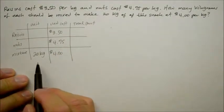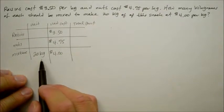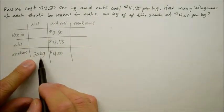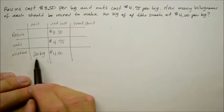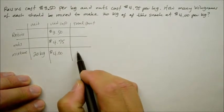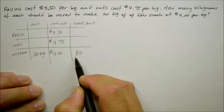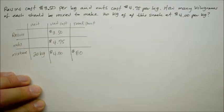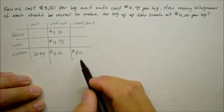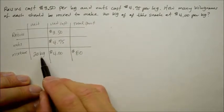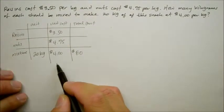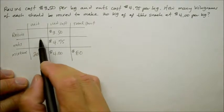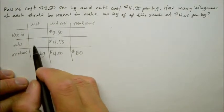Here's what we do know. We want a total of 20 kilograms. And each kilogram is $4 per unit. So that's 20 times 4, which is $80. This customer will pay $80 for 20 kilograms that has a mixture of raisins and nuts. Now, how many kilograms do you need for raisins? And how many for nuts?